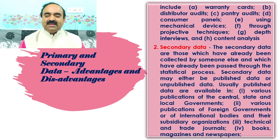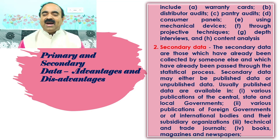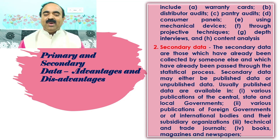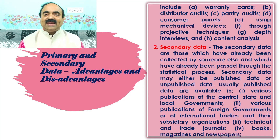The secondary data are those which have already been collected by someone else, and which have already been passed through the statistical process. Secondary data may either be published data or unpublished data. Usually, published data are available in: one, various publications of the central, state, and local governments.